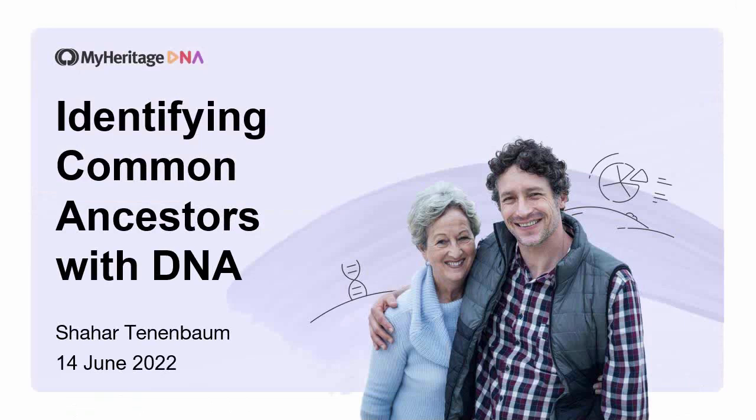Sandy notes that her shared matches go down to 8 centimorgans or 0.1%. Kirsten also says the least amount she has is 8 centimorgans. So the lower boundary may be 8 centimorgans for shared matches.